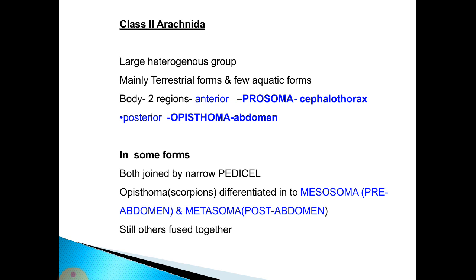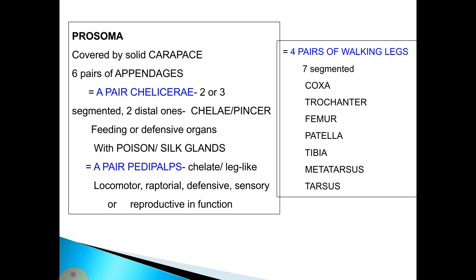The second class is Arachnida, a large heterogeneous group that is mainly terrestrial with a few aquatic forms. The body contains two regions: anterior prosoma or cephalothorax, and posterior opisthosoma or abdomen. In some forms the two are joined by a narrow pedicel. In scorpions the opisthosoma is differentiated into a mesosoma and metasoma — pre-abdomen and post-abdomen — while in others they are fused together.